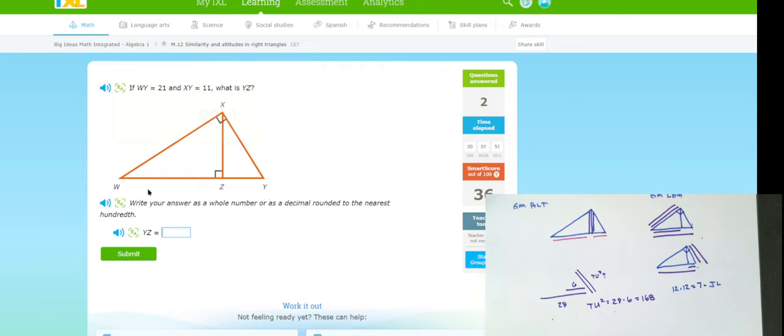WY is the whole bottom. XY is the right. They want to know YZ. So, I know that WY times YZ is equal to XY times XY. WY times YZ. So, 11 YZ is equal to, oh, that's 21. YZ is equal to 11 squared. So, YZ is 121 over 21. That's a calculator. Here, I get 5.76.